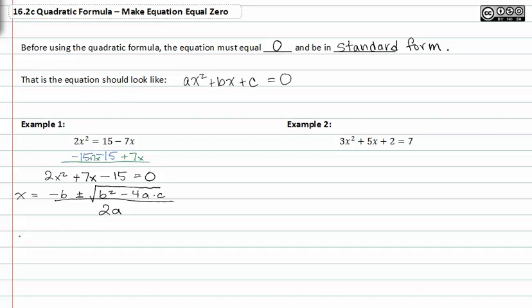Substituting my values in, I get x is equal to negative seven plus or minus the square root of b squared, minus four times two times negative fifteen all over two times two.